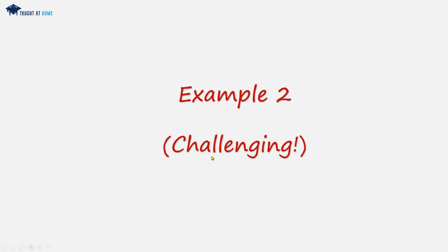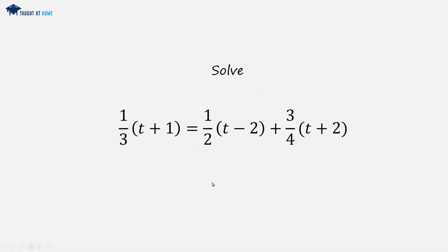Example 2. This one is a little more challenging because we've got brackets and fractions—fractions that are multiples of the brackets. We could have written this 1/3 times the bracket (t + 1) as (t + 1) over 3. We've brought the fraction out of the bracket and now have it as a multiplier.